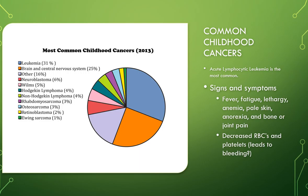Some signs and symptoms include fever, fatigue, lethargy, anemia — being pale in color — loss of appetite, bone or joint pain depending on the type of cancer, and decreased RBCs and platelets that could lead to bleeding. Remember, if cancer affects the bones, it's going to affect your blood cells.